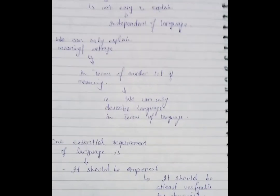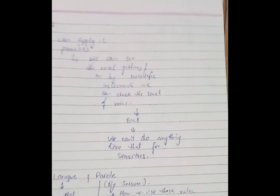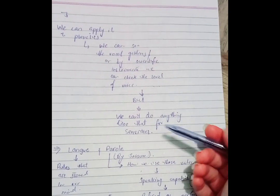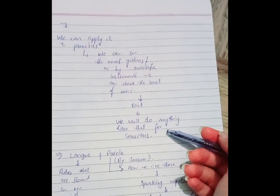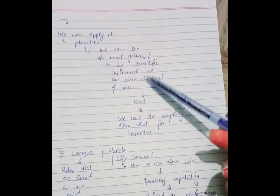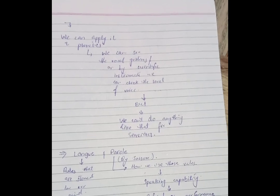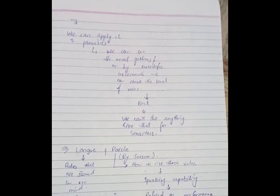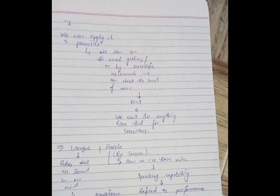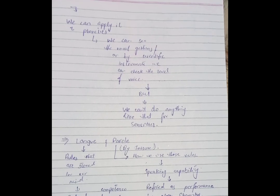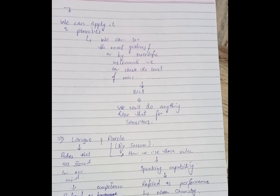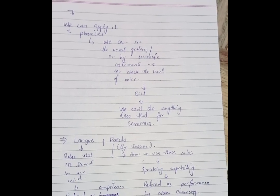In phonetics, we can deal with sounds and the quality of sound — we can check the quality of sound by instruments and check the level of voice. But in semantics, we cannot use such instruments because in semantics we discuss meanings, and meanings cannot be judged, seen, or observed in the same way.